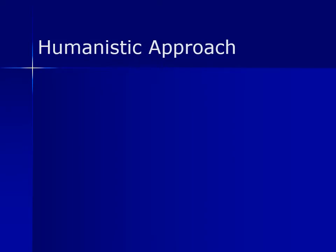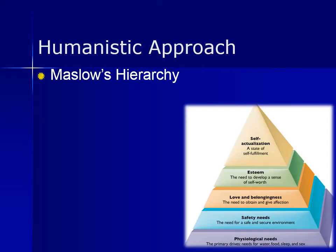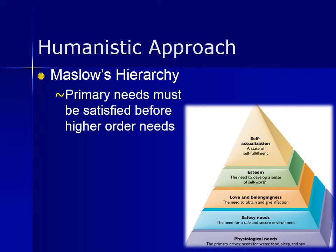Humanistic theories of motivation are based on the idea that people have strong cognitive reasons to perform various actions. This is famously illustrated in Abraham Maslow's Hierarchy of Needs, which presents different motivations at different levels. First, people are motivated to fulfill basic biological needs for food and shelter, as well as those of safety, love, and esteem. Once the lower-level needs have been met, the primary motivator becomes the need for self-actualization, or the desire to fulfill one's individual potential. According to this theory, people are driven to achieve their maximum potential and will always do so unless obstacles are placed in their way.